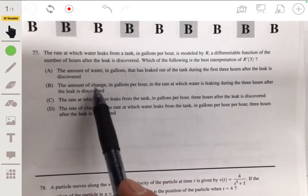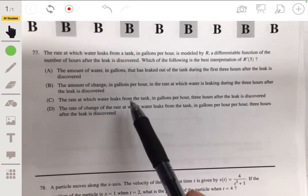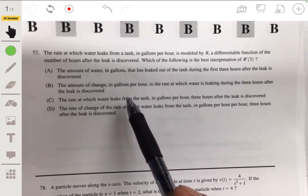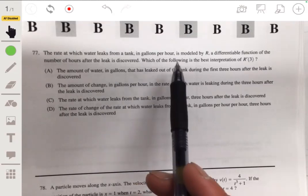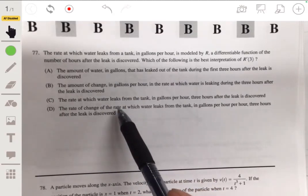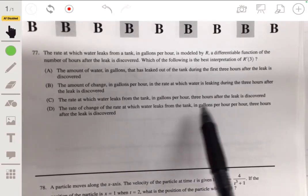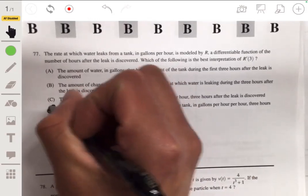That's a funny answer but it's not going to be B. The rate at which water leaks from the tank in gallons per hour three hours after the tank—no, that's what r is. R is already telling you that. The rate of change of the rate at which water leaks from the tank, gallons per hour per hour, three hours after the leak is discovered. So it's going to be D.